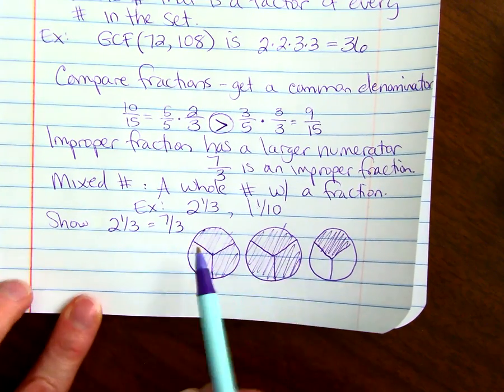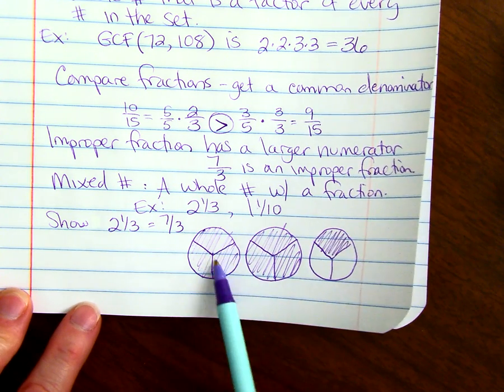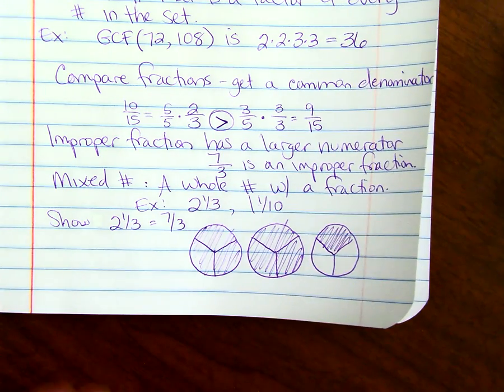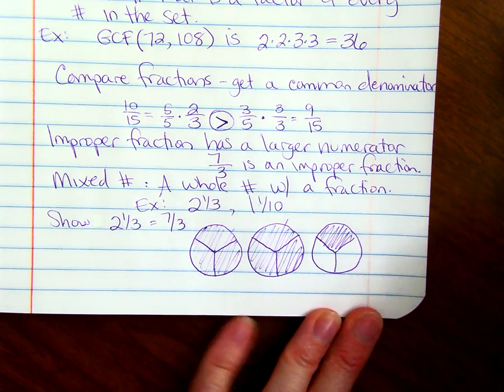If you notice, this represents 2 and 1 third. And if you count up all the thirds, you would get 7 thirds. So that's the way you would demonstrate that. That's the end of the lesson.